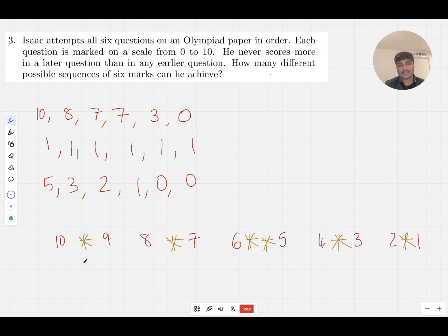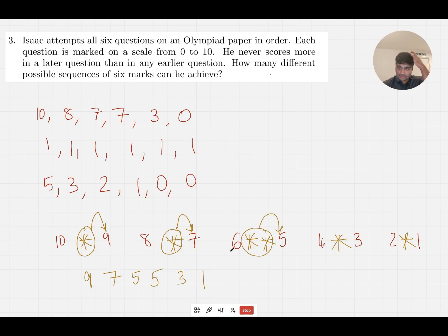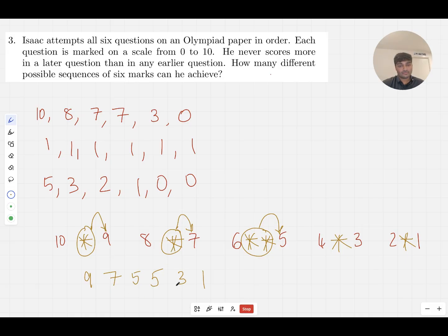This image corresponds to the student getting a score of 9 on the first question, 7 on the next, 5 on the next two questions, 3 on the next question, and 1 on the last question. So basically, wherever the star is, I look at the number to the right of it. The double star means he gets 5 on two questions, which is allowed. There is essentially a one-to-one correspondence between how I can place these stars and a sequence of marks the student could achieve.